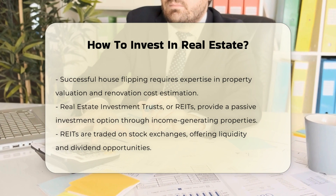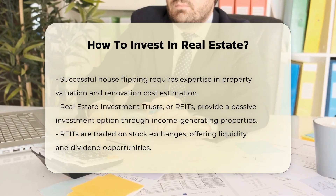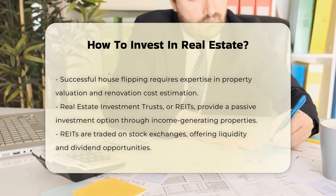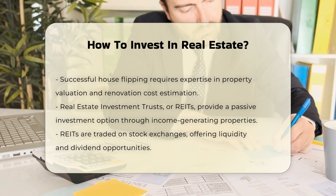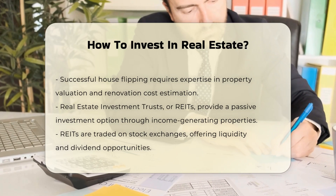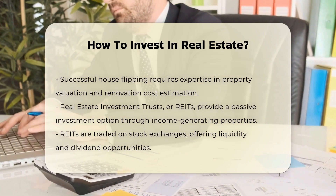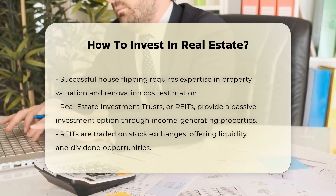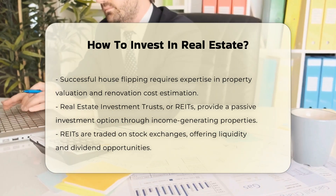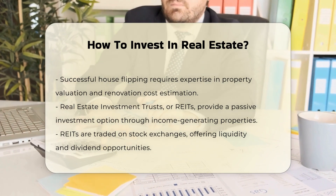Real estate investment groups, or REIGs, are another indirect investment method. These groups pool money from multiple investors to purchase and manage rental properties. Investors can own units within the properties, but the management company handles all the logistical tasks, such as maintenance and tenant management.